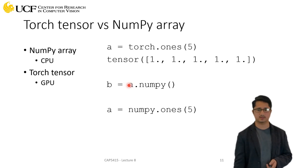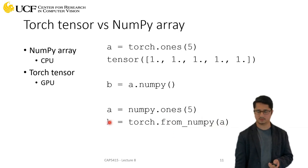You can do the other way around as well. For example, if you have a NumPy array, then you can call torch.from_numpy(). So in this case a is your NumPy array and b is your torch tensor.